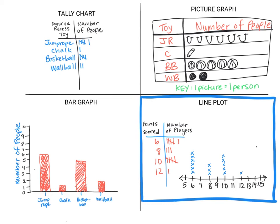The only thing missing from my line plot is a title and a label below the numbers. The numbers represent the points that were scored, and the title might be 'number of players.' All right guys, you've got this — we've talked about all four graphs. You are good to go for your chapter nine review and taking your test. Thanks for watching, have a good day.